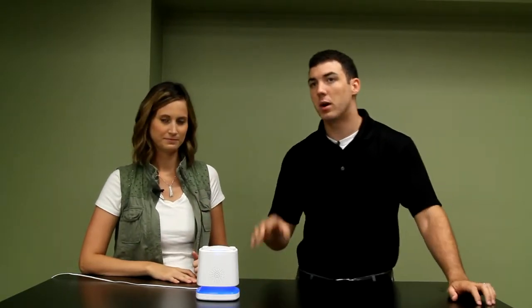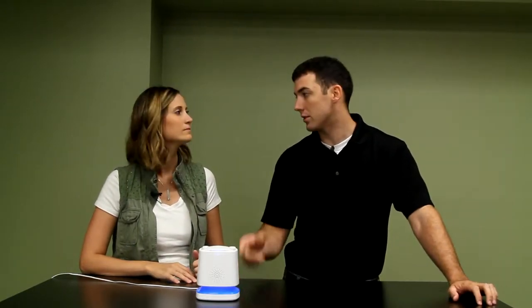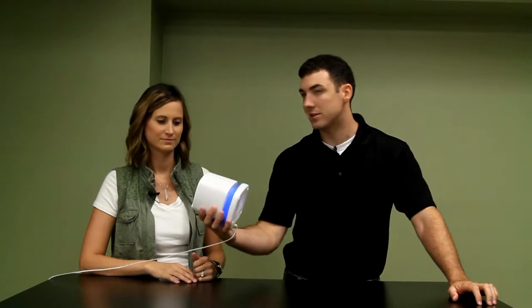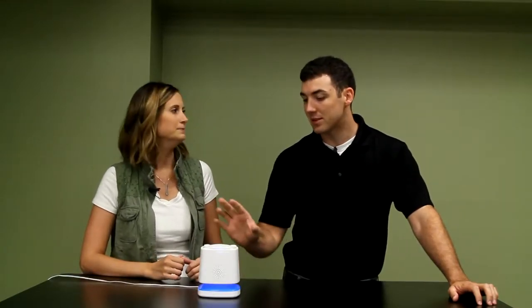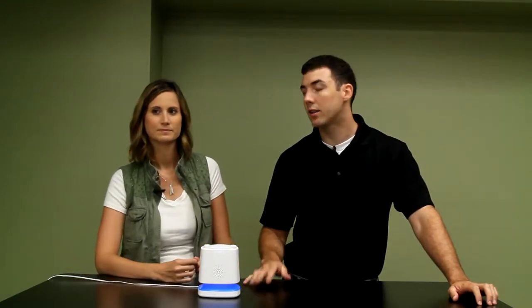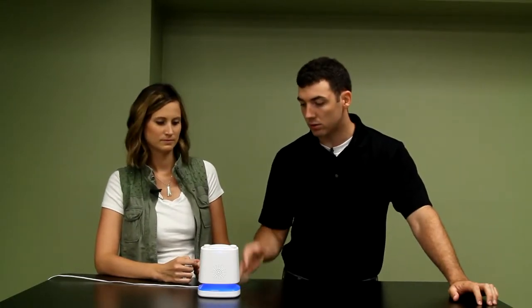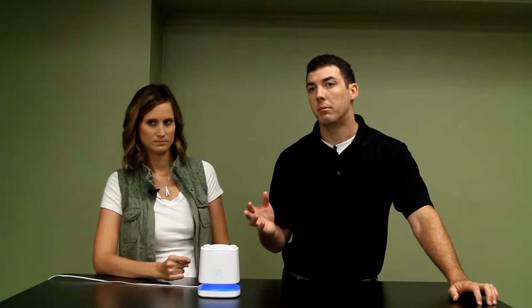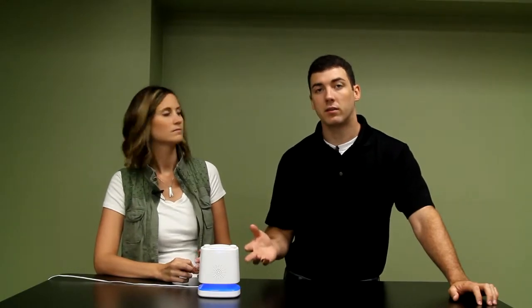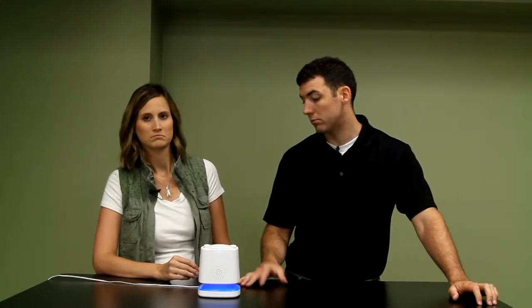Today for the review we have the Munchkin nursery projector and sound system. Kind of a cute little device here. This thing retails for $29.35 on Amazon. It has a 3.1 star rating, so a low rating, but it has 3,956 reviews so it's a pretty common product for people with young kids.